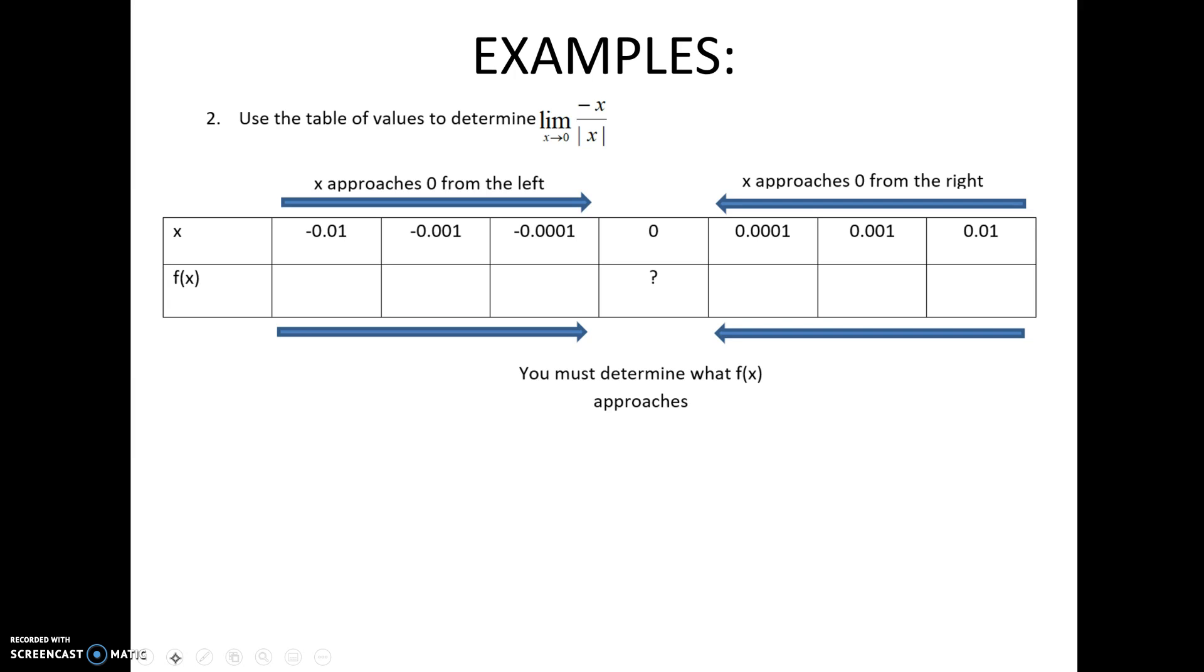Use the table of values. Now, I said we could use a calculator, but on an example like this, you won't need to. Limit as x approaches zero. So again, back to the definition. I'm going to get arbitrarily close to zero on either side of zero. So that means I'm going to pick values greater than zero. That would be as x approaches zero from the right-hand side. And then I'm going to pick values less than zero. That would be values as x approaches zero from the left-hand side of zero.